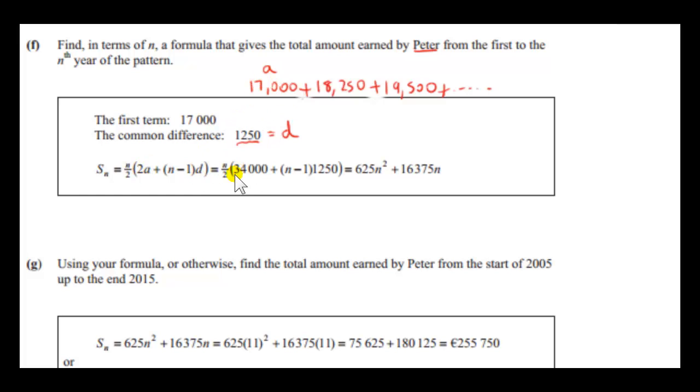A, the first term is 17,000. We have to multiply that by 2 to get 34,000. We have to multiply N minus 1 by the difference, which is 1,250. And we have to take all this expression and multiply it by N over 2. So simplifying what's inside, we get 1,250 times N. And we have 34,000 minus 1,250. I've simplified out what's inside the bracket. And it has to be multiplied by N over 2. Well, N over 2 times 1,250 is 625N squared. 1,250 divided by 2 is 625. And we have to multiply N over 2 by this number. We have to get half of this number, which is 16,375. Actually, this is a plus sign here.